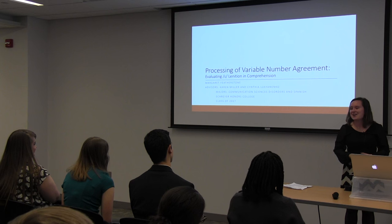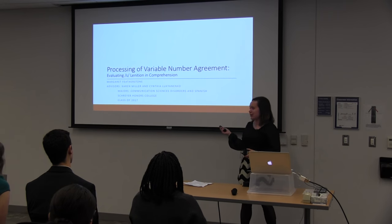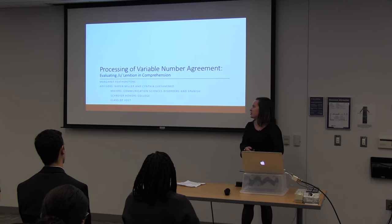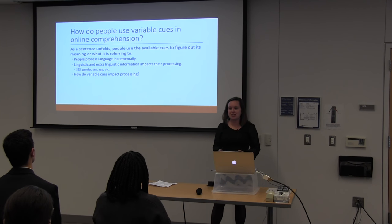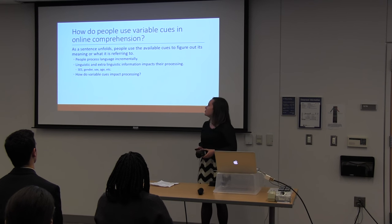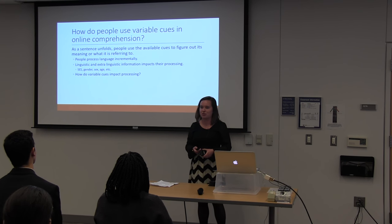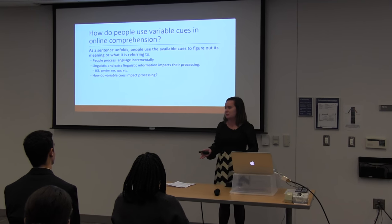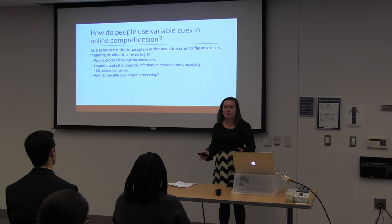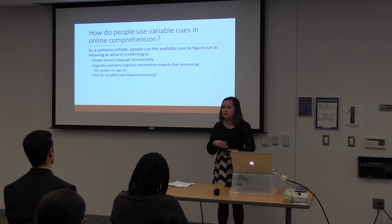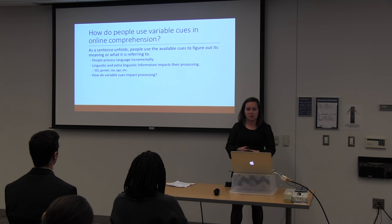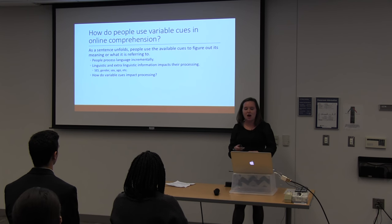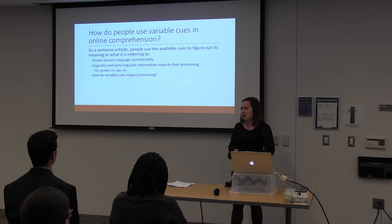Hello everyone. My name is Maggie Featherstone, and I will be talking to you about variable number agreement and explanation and comprehension. My main question here was: how do people use variable cues in online comprehension? We all know that as a sentence unfolds, people process language incrementally — taking in all the information they can to figure out what might be coming next, or what cues they can use to figure out what's going on. These cues might be linguistic or extra-linguistic factors, and this all impacts their information processing.